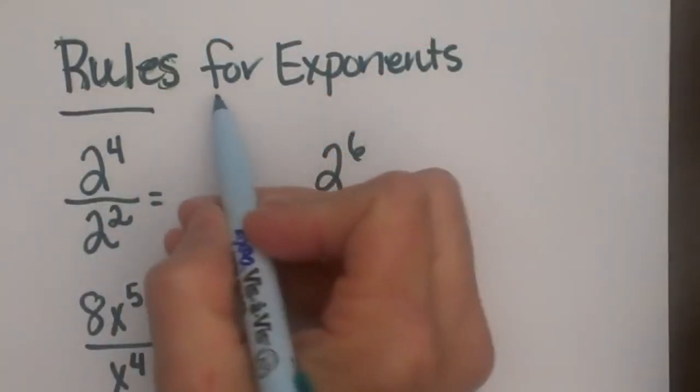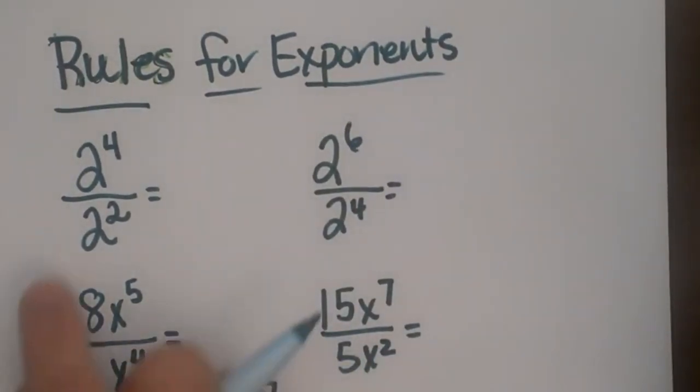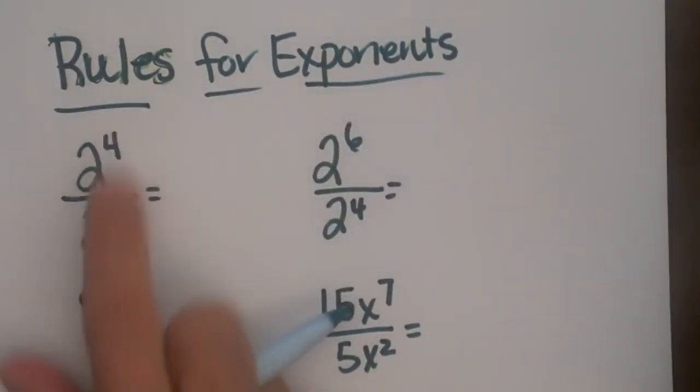We're going to look at the rules for exponents when you are dividing. Okay, so here we've got 2 to the 4th power divided by 2 to the 2nd power.